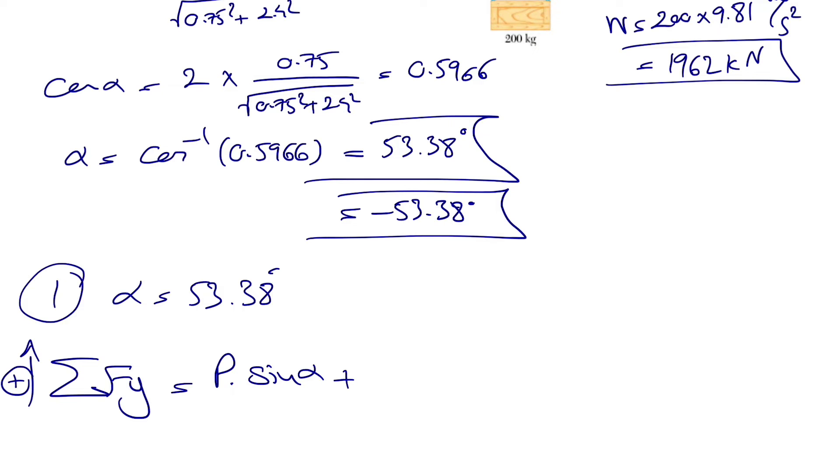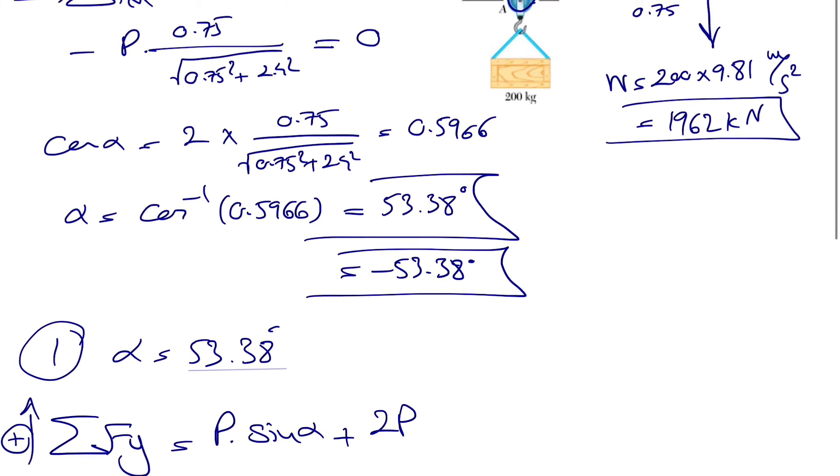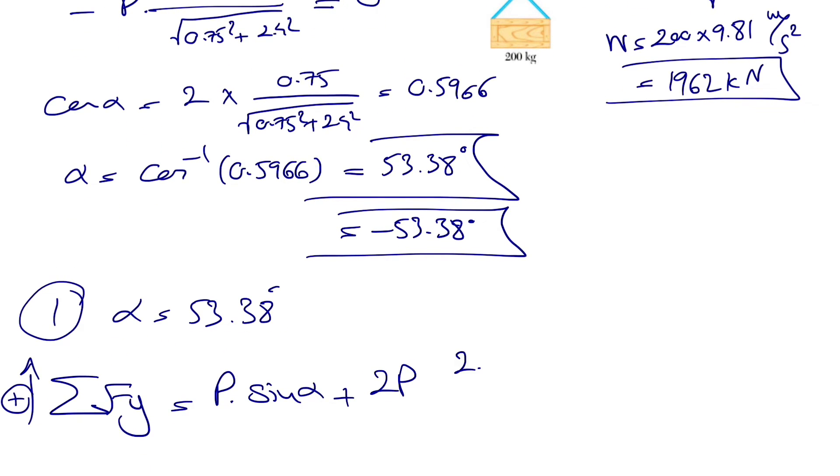If we do that, so in y we'll have P sine of alpha, actually plus 2P this time, sine of the angle that we have, which will be 2.4 divided by square root of 0.75 squared plus 2.4 squared.